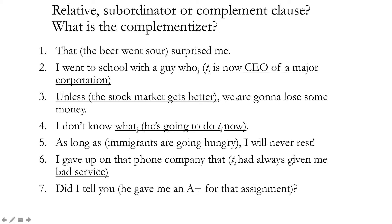'Unless the stock market gets better, we're going to lose some money.' Here 'unless' is the complementizer. 'Unless the stock market gets better' is not the object of the verb 'lose,' and it's not telling me which of the many 'monies' I'm talking about. It's giving more information about the whole idea of losing money — the conditions under which I would lose money, when I would lose it. So this is a subordinate clause.